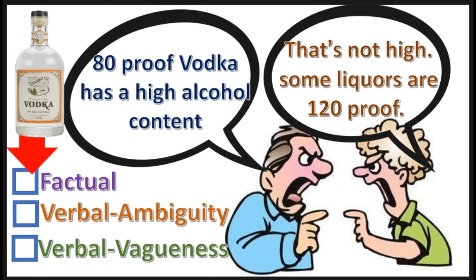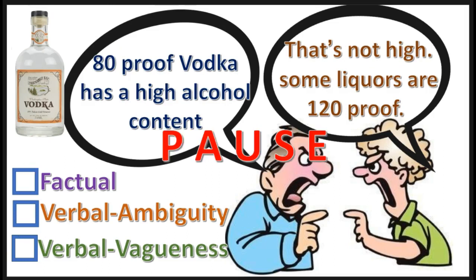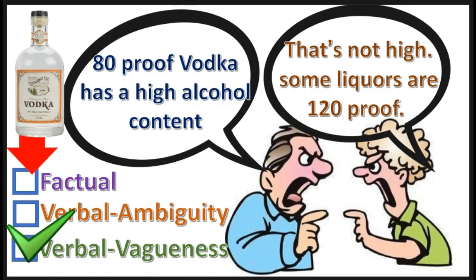Next practice problem — select the correct answer. Press pause, the answer will appear in three, two, one. That's correct — it's a verbal vagueness dispute. The word 'high' is interpreted in different degrees.